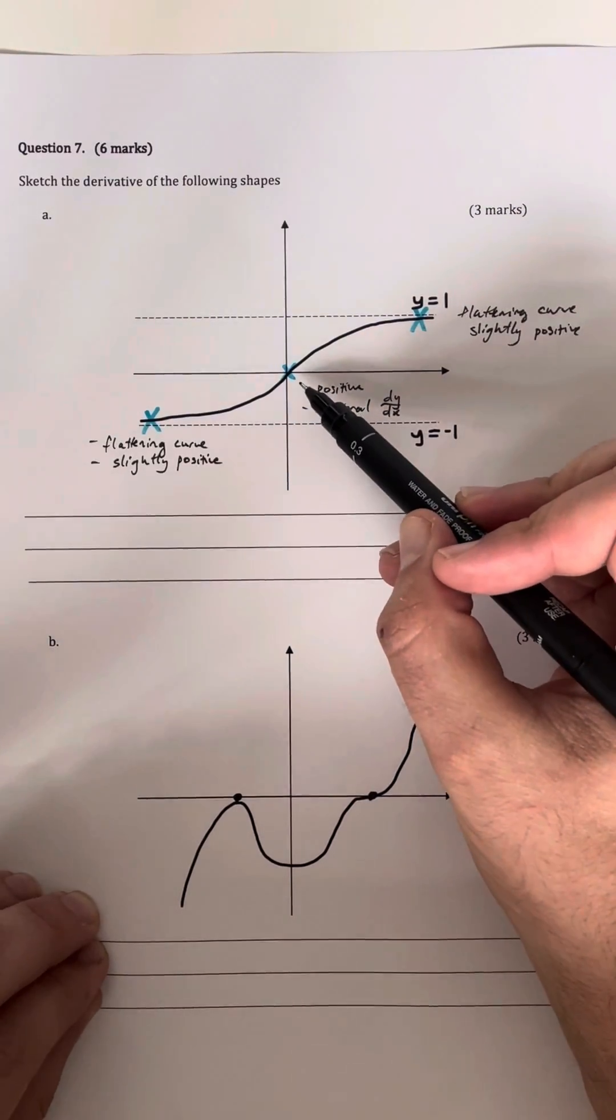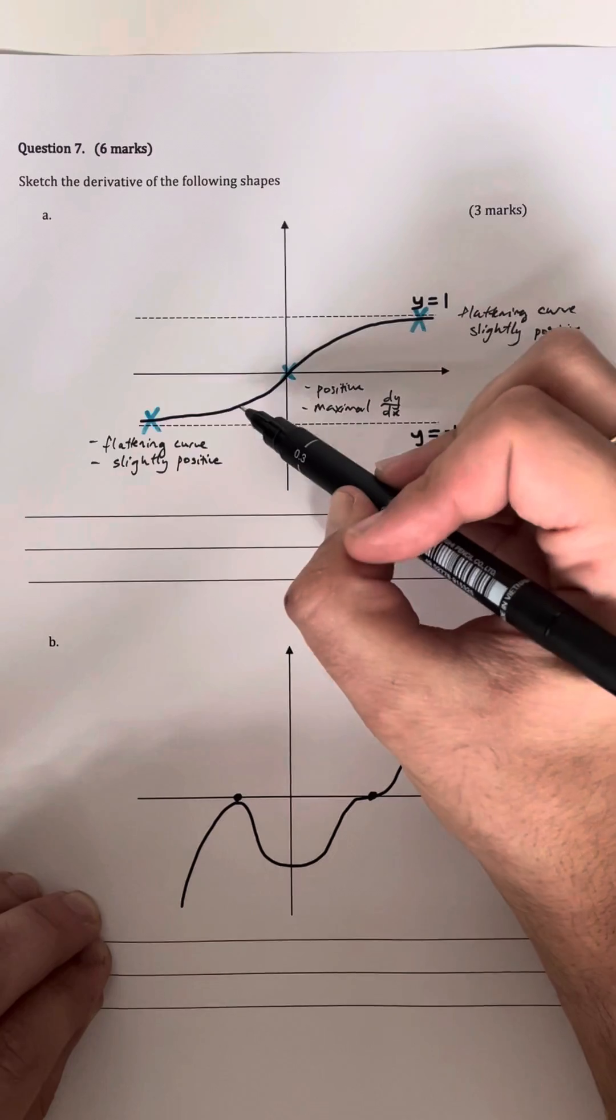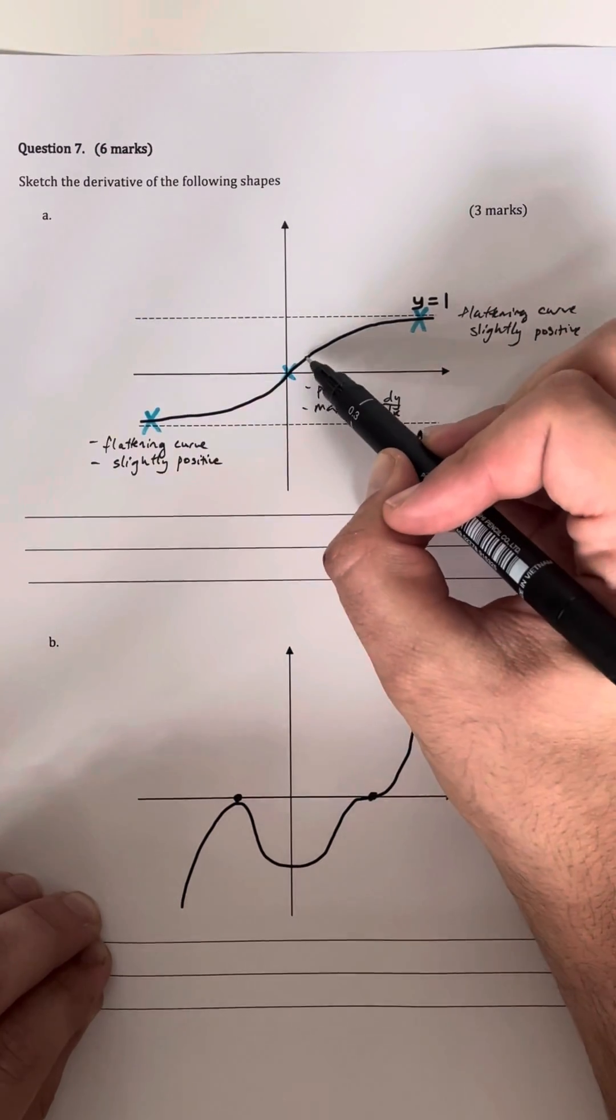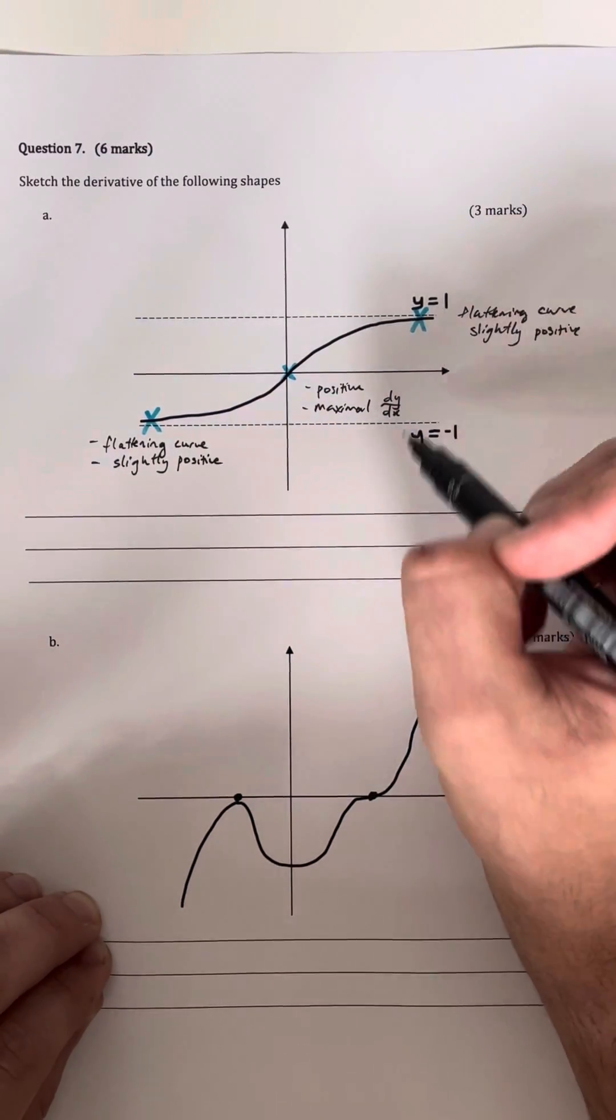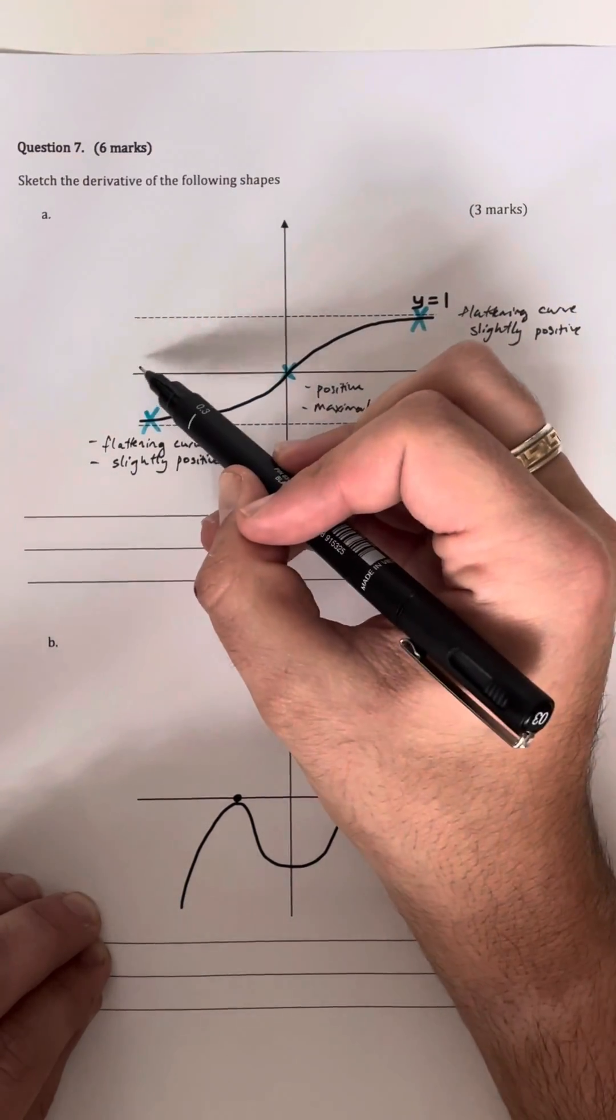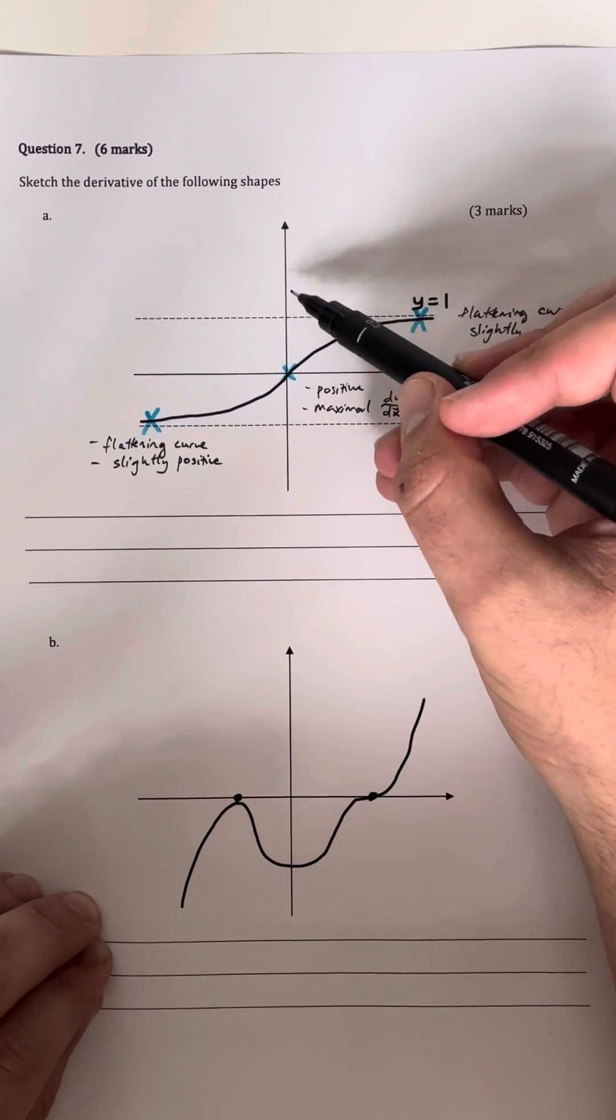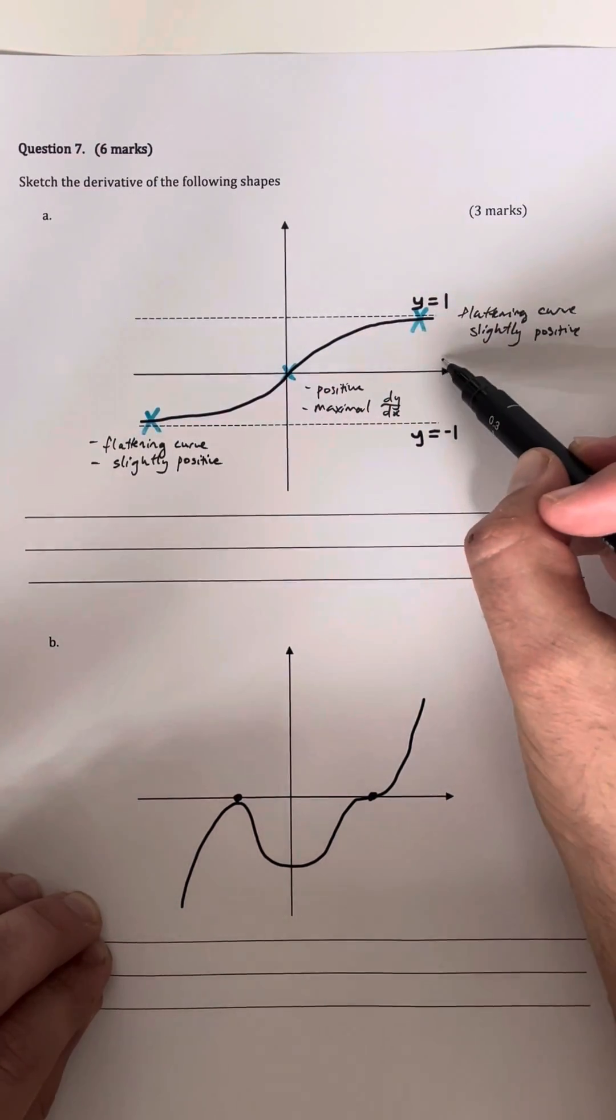Now in this middle point here it's definitely a positive gradient and we can assume that this is the maximal dy/dx because you can see we've reached this origin point and then we start to flatten off as we get closer to the other asymptote. So what we can assume is that we have a slightly positive start, we have a peak in the middle at x is equal to 0 or on the y-axis, and then we flatten off again.